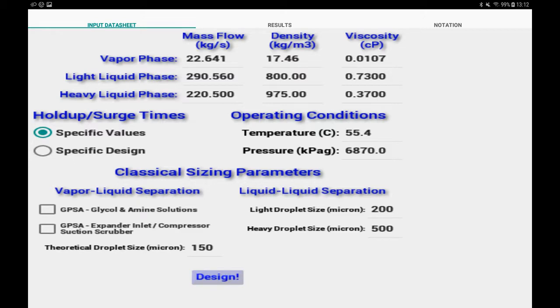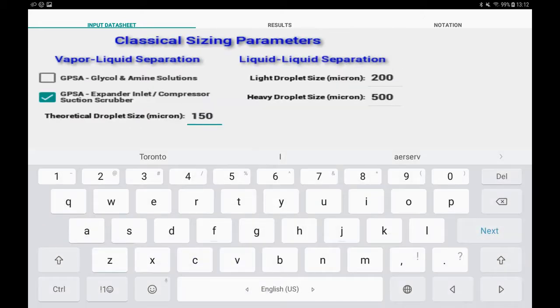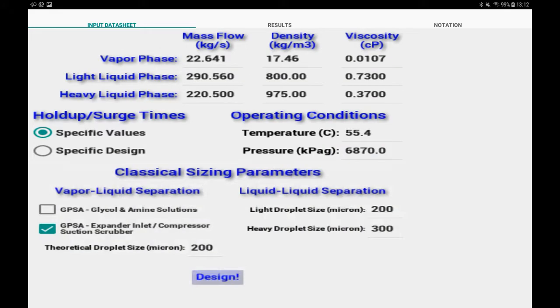We had another option which will be discussed later. Classical sizing parameters can also be adjusted to improve the accuracy of classical methods. The vapor-liquid calculations for theoretical method, and the liquid-liquid calculations for all classical methods, are highly affected by the assumed liquid droplet sizes. You can change the default values based on your own engineering judgment or empirical data of your design case.